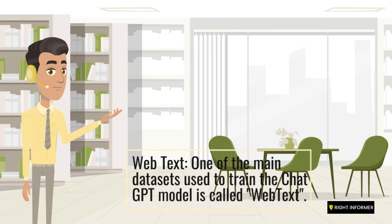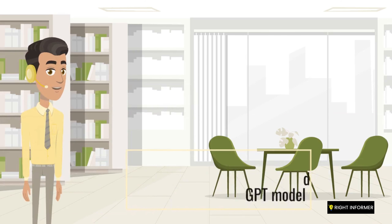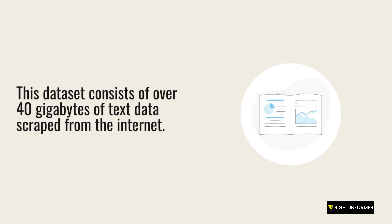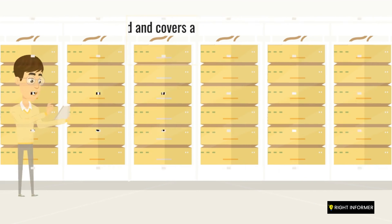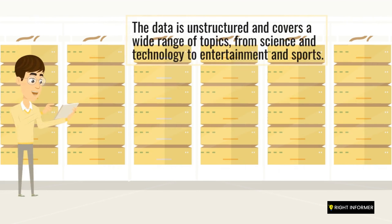One of the main datasets used to train the ChatGPT model is called Webtext. This dataset consists of over 40 gigabytes of text data scraped from the internet. The data is unstructured and covers a wide range of topics, from science and technology to entertainment and sports.